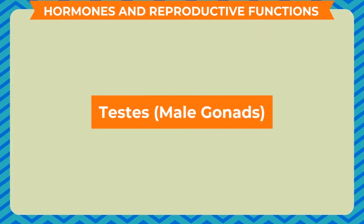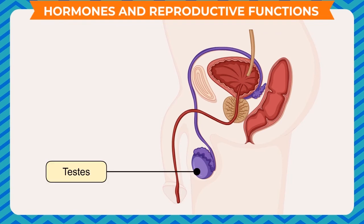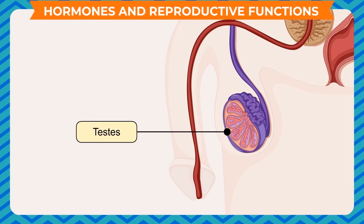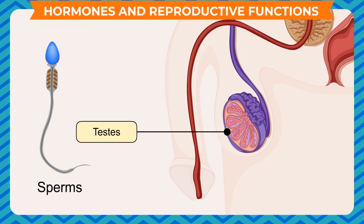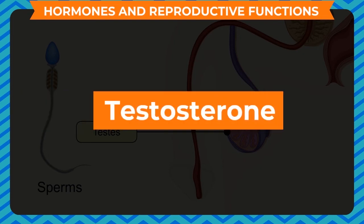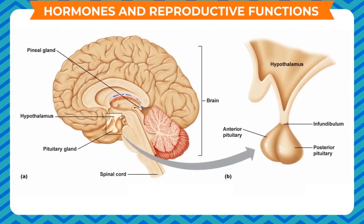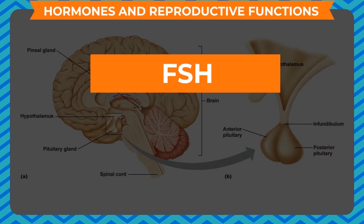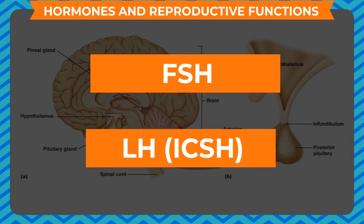The male gonads are a pair of testes lodged in a sac-like structure called the scrotum. Each testis has a large number of seminiferous tubules. The germ cells present in these tubules finally result in the formation of sperms. In between the tubules are Leydig cells, or interstitial cells, which are the source of the male hormone testosterone. The functioning of the testes is under the control of anterior pituitary hormones, namely FSH and LH (ICSH).